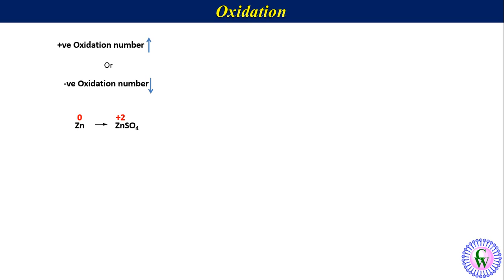Conversion of SnCl2 to SnCl4 — here the oxidation number of tin is changing from plus 2 to plus 4. Conversion of bromide ion to bromine is an example where there is a decrease in negative oxidation number during a reaction. Here the oxidation number of bromine is changing from minus 1 to 0.